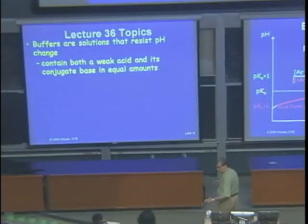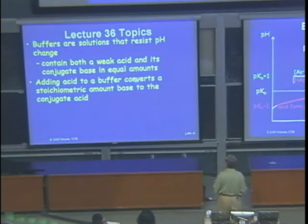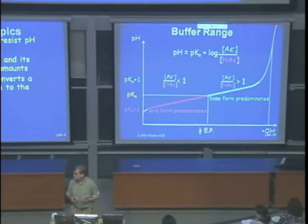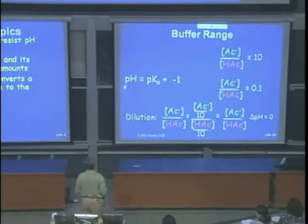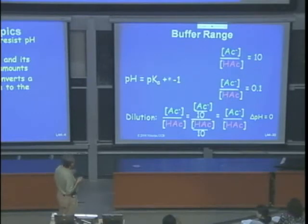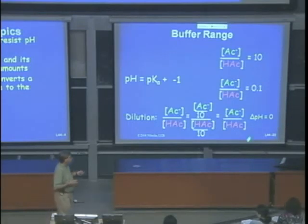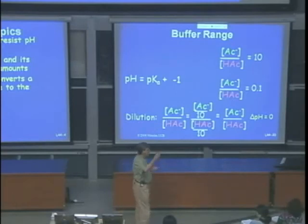Adding acid to a buffer converts a stoichiometric amount of the conjugate base to the conjugate acid, causing only a small pH change. The good buffer range is a ratio from 0.1 to 10, giving pH = pKa ± 1. Diluting the buffer doesn't significantly change the pH because both acid and conjugate base are diluted equally.